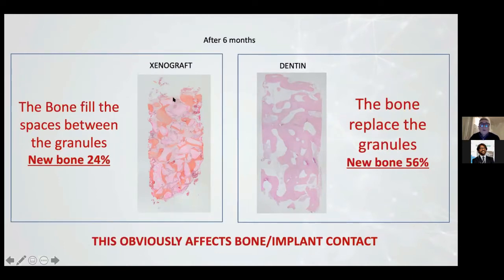Obviously if you place an implant in the xenograft side, we have a very thin bone-implant contact. But in the dentine case, we have 55% of bone able to have contact with an implant.